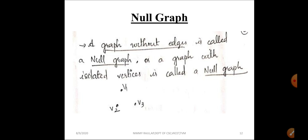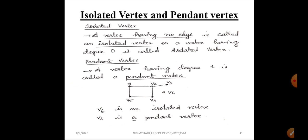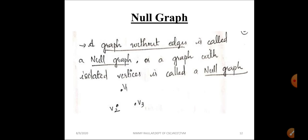To summarize: we covered introductory graph concepts including end vertices, self-loop, parallel edges, simple graph, finite graph, and infinite graph. Then we discussed incidence relationship, degree, adjacent vertices and edges, isolated vertex, pendant vertex and pendant edge, and finally null graph.